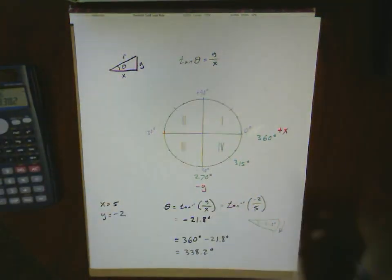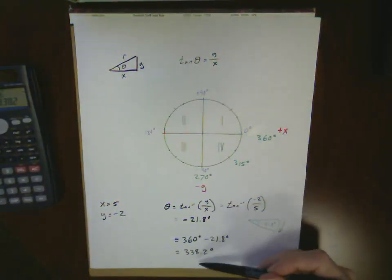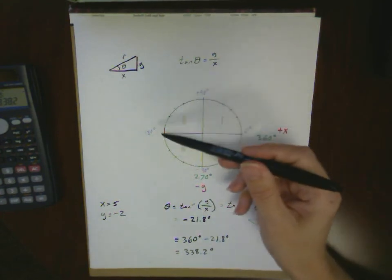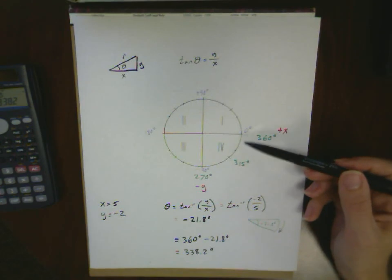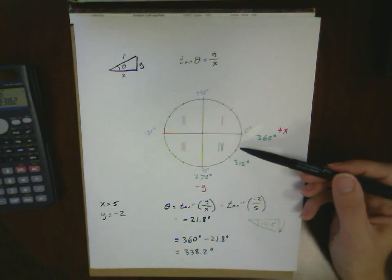So on our standard polar coordinates, 338.2 degrees counterclockwise around the circle is giving us the same sort of value as minus 21.8 degrees, moving clockwise below the x-axis.